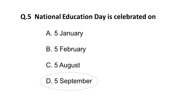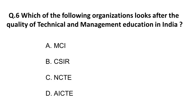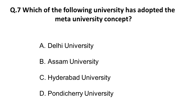The next question: which of the following organizations looks after the quality of technical and management education in India? The options are: A) MCI, B) CSIR, C) NCTDA, D) AICTE. MCI is the Medical Council of India, which looks after medical education. CSIR looks after scientific research. The correct answer is AICTE — it looks after the quality of technical and management education.